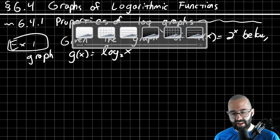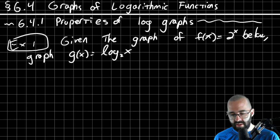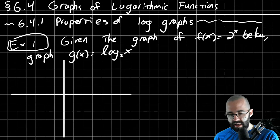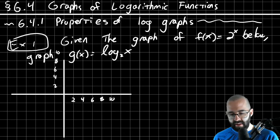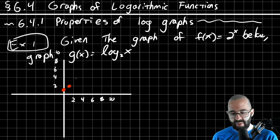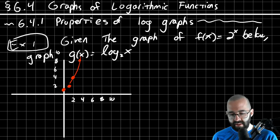The problem gives you some graph. The graph is counting by twos — two, four, six, eight, ten — like so. I'm giving you the graph of 2^x. Two to the x starts at one, and when x equals one, y equals two, and then it keeps on doubling like so. Two to the x looks like this.